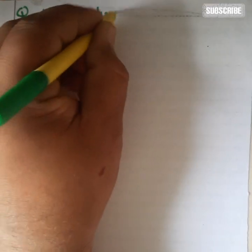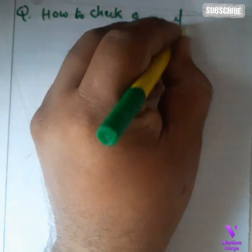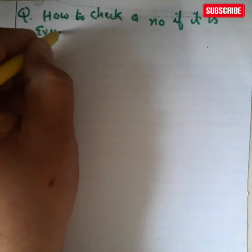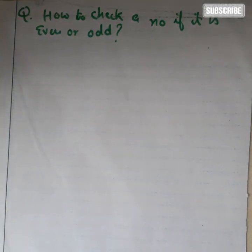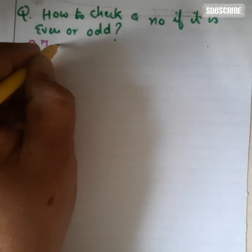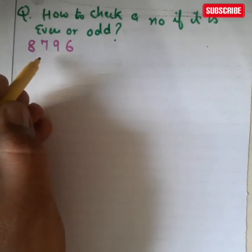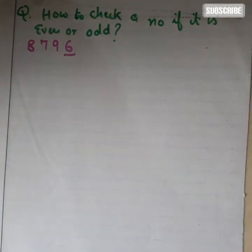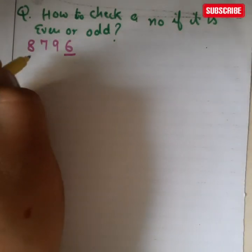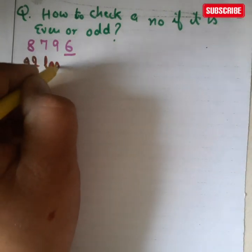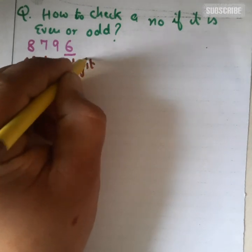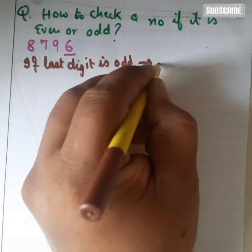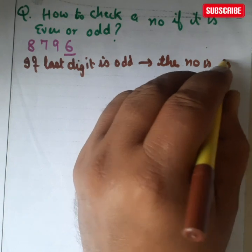In this section we are going to check whether a number is odd or even. Let us consider the number 8796. The first rule is that you check the last digit. If the last digit is odd, then the number is odd.